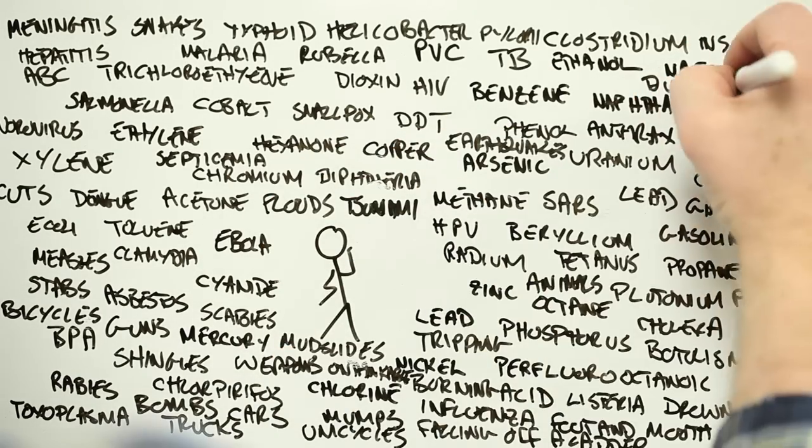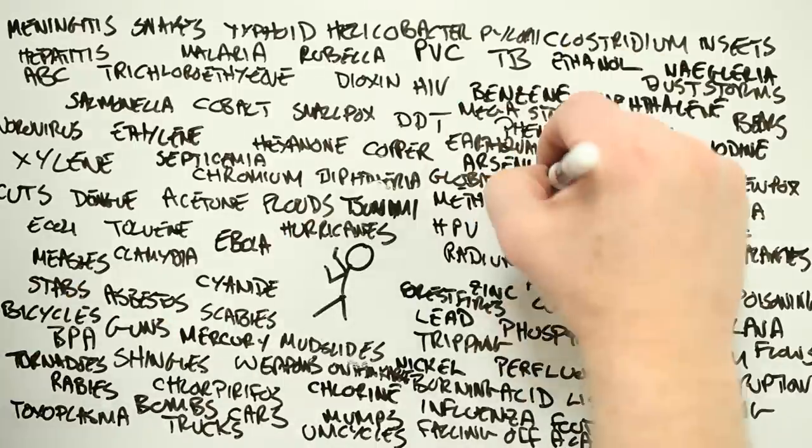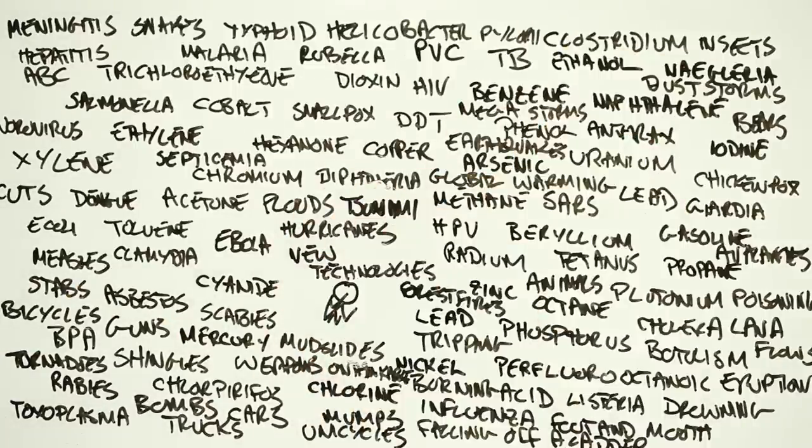There's tsunamis, floods and mudslides, ice, dust storms, avalanches, and there's forest fires and lava flows, eruptions quite astounding, hurricanes, tornadoes, major storms and global warming, new technologies that look so good but harm you without warning.